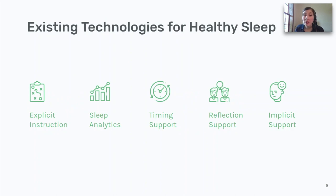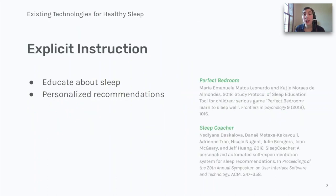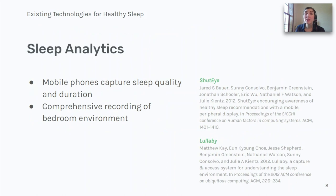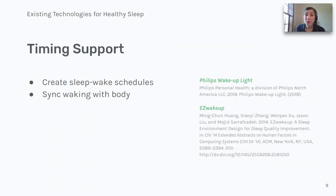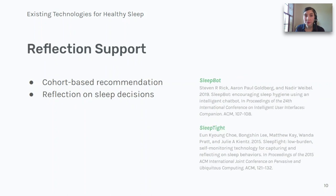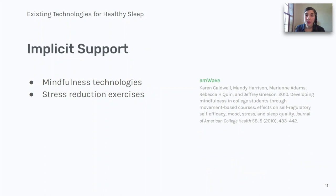When it comes to existing interventions for healthy sleep, we find five major approaches. Explicit instruction describes educating users or giving personalized recommendations. Sleep analytics includes visualizing users' sleep data from their smartphones or sensors within the environment. Some technologies help with sleep timing by creating sleep-wake schedules or syncing waking with the body's rhythm or sleep state. Reflection support describes helping users to be more aware of their decision-making around sleep by receiving cohort-based recommendations or using text input to reflect on sleep decisions. Implicit support refers to influencing sleep indirectly, such as through mindfulness technologies or stress-reduction exercises.